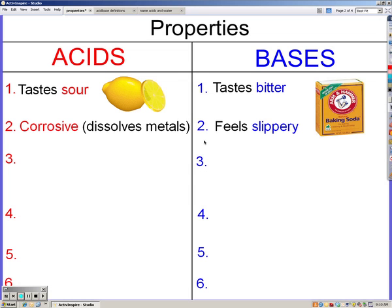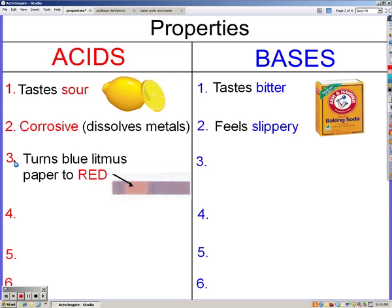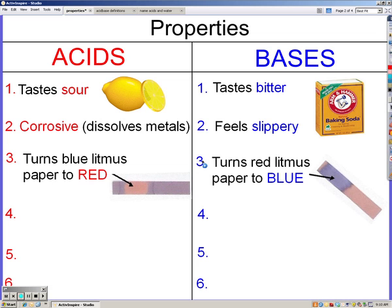Acids turn blue litmus paper red. There are lots of different indicators to tell if something's an acid or a base. Litmus paper is just one of them. Litmus paper turns blue in the presence of a base. So red for acids, blue for bases. Blue, bitter, base.